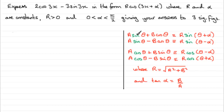They're all basically exactly the same. When you've got an expression like this, r turns out to be the square root of a squared plus b squared, and the tan of alpha is b over a.